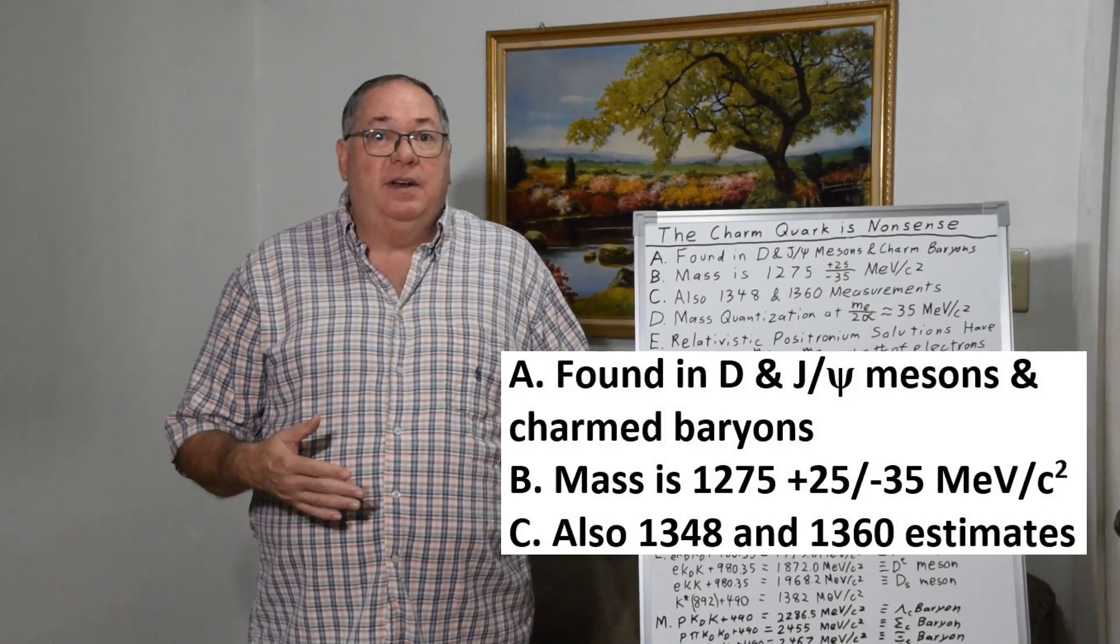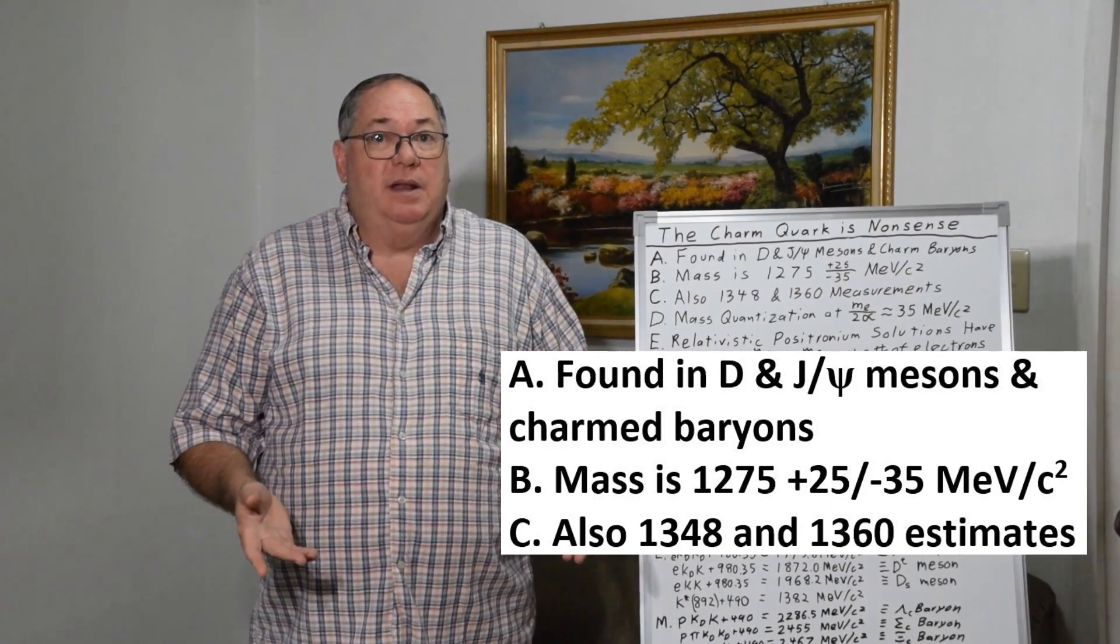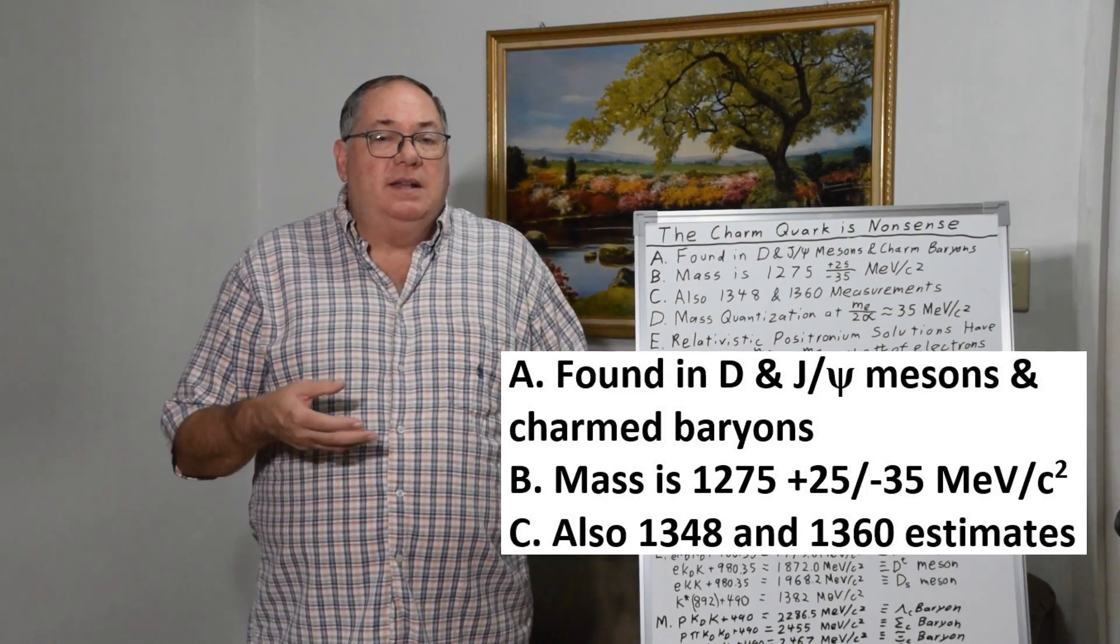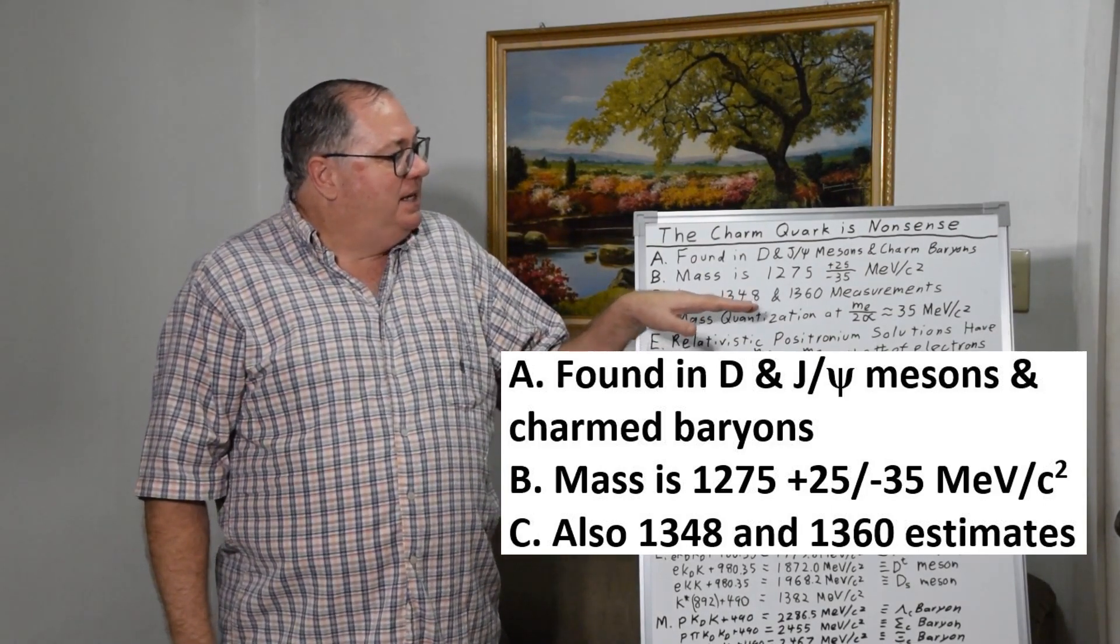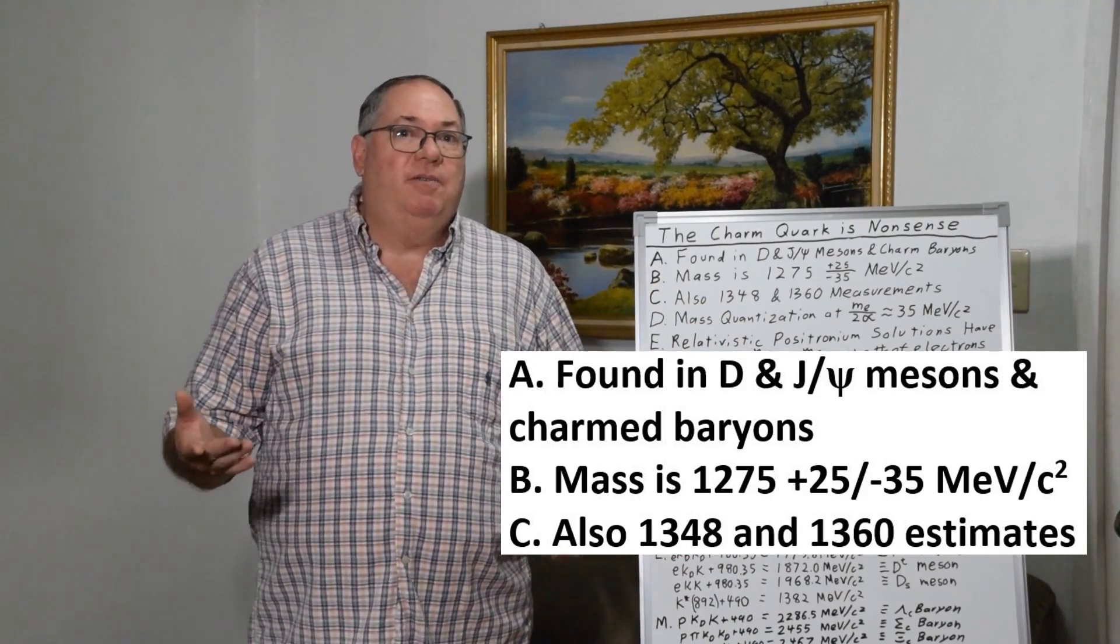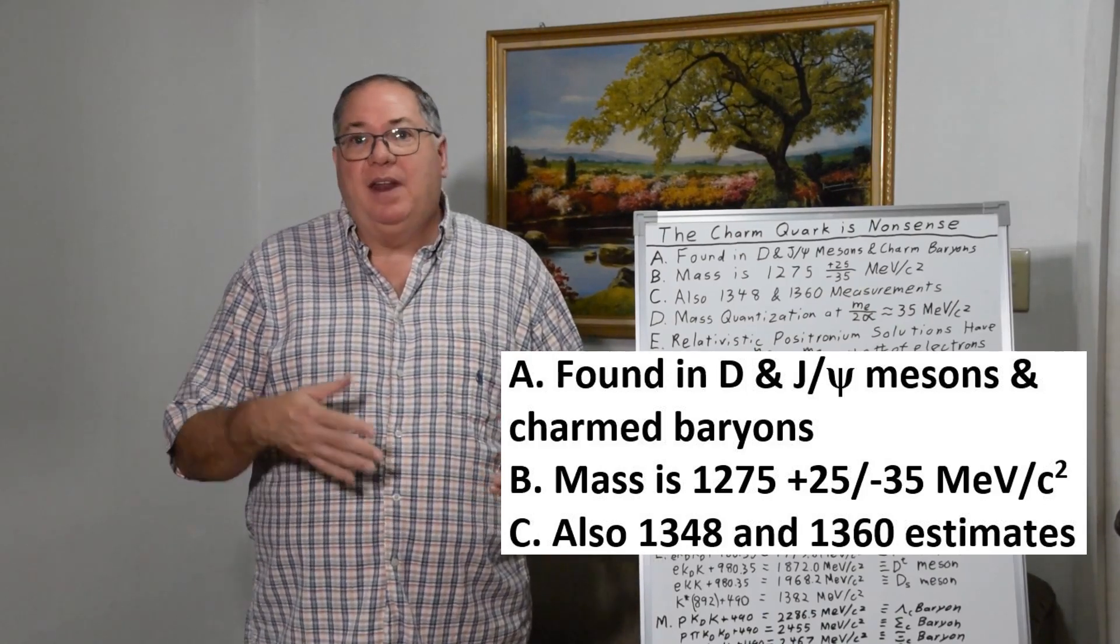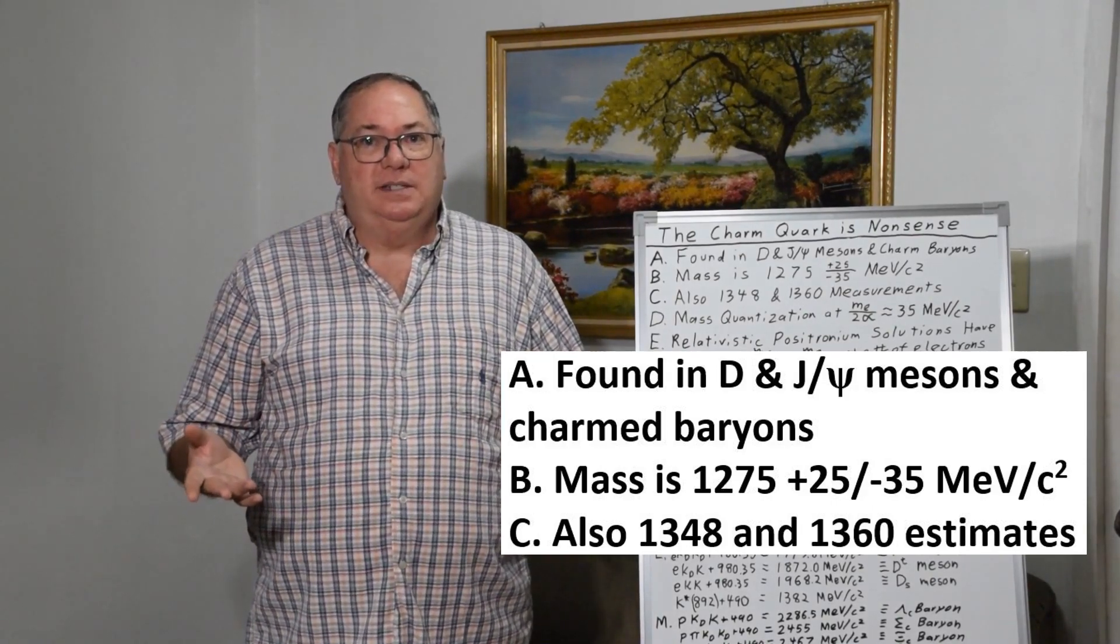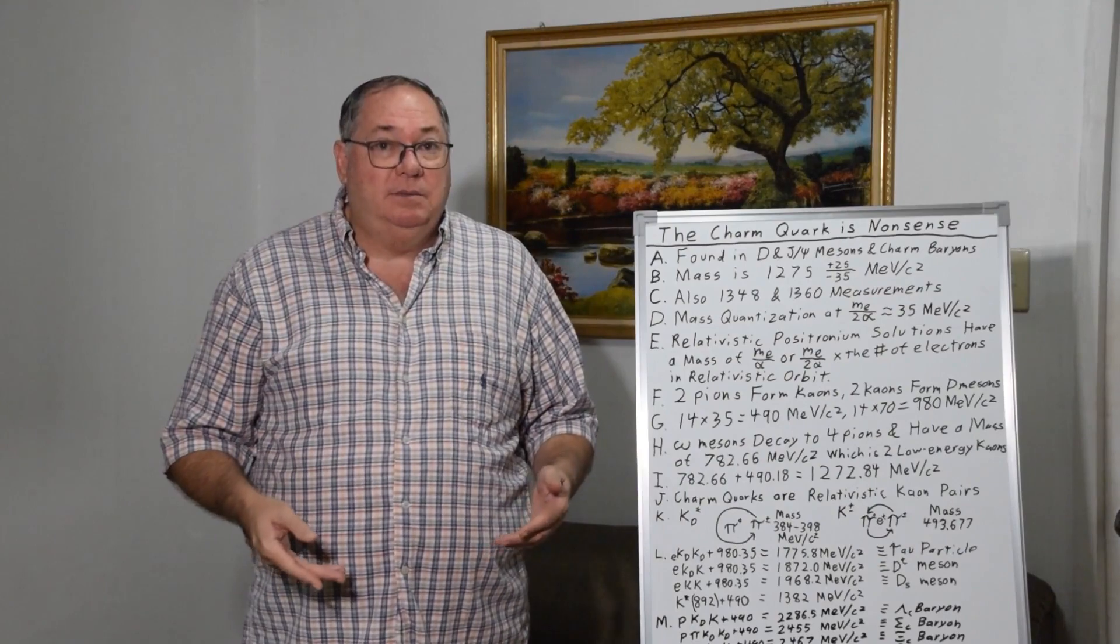And of course, the reason it's not known that very accurately is because it's not a stable particle. Charm quarks have never been observed on their own, so they have to determine what the mass is by subtracting it from other masses. So they get estimates like a high of 1348 or 1360 and low around 1000 MeV/c². There's a wide range, and in some studies thought to be an even higher range. So the mass isn't known very precisely. If it was a stable free particle, we'd probably know it to five decimal places, but we don't.